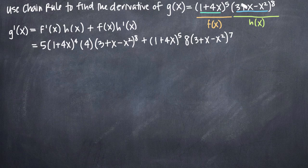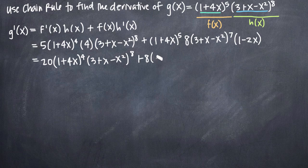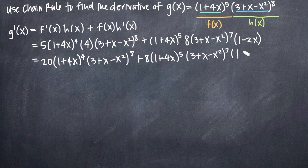According to chain rule, we need to multiply by the derivative of the inside function, which is 3 plus x minus x squared. Taking the derivative term by term: the derivative of 3 is 0, the derivative of x is 1, and the derivative of negative x squared is negative 2x. So we multiply by 1 minus 2x. Now it's just a matter of simplifying. We bring the 4 out in front to get 20 times 1 plus 4x to the 4th, times the quantity 3 plus x minus x squared to the 8th, plus 8 times the quantity 1 plus 4x to the 5th, times 3 plus x minus x squared to the 7th, times 1 minus 2x.